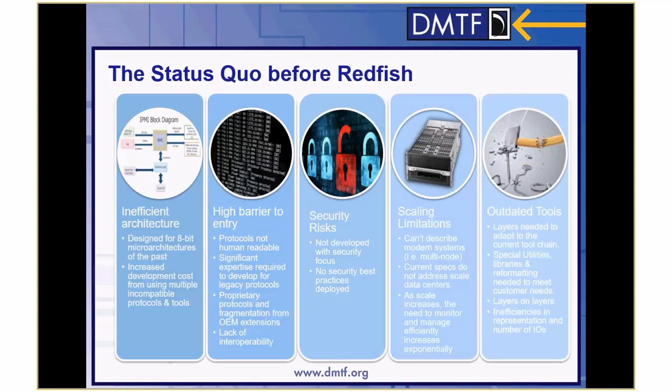The architectures built 20 years ago were built for servers of that era — the bladed PC really hadn't come out of the gate yet. So those bitwise protocols really couldn't describe modern systems. And the current specs didn't address data centers at scale. The replacements ended up having so many associations and traversals that they wouldn't scale well either, just because of the number of IOs it took to represent a modern system.